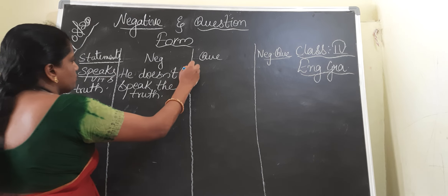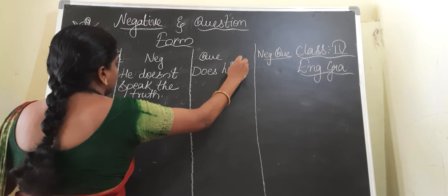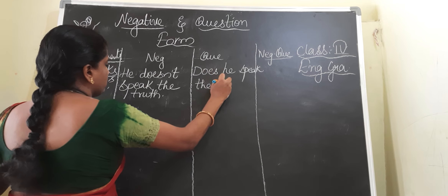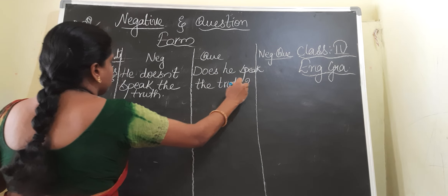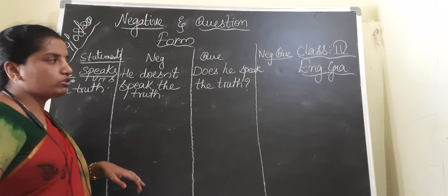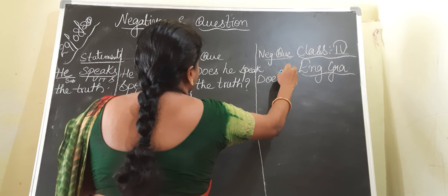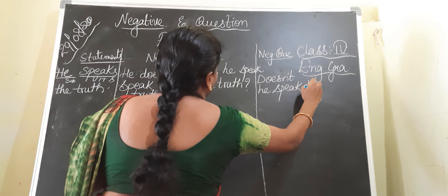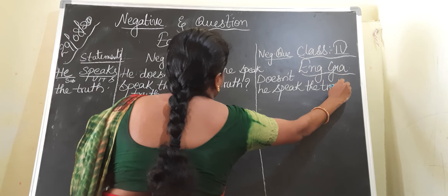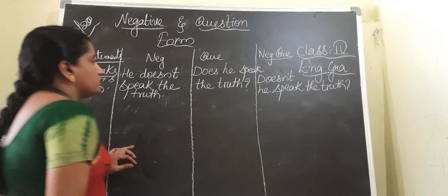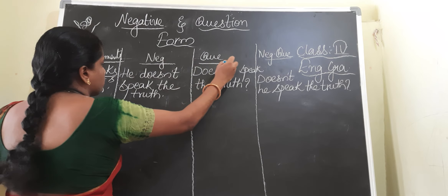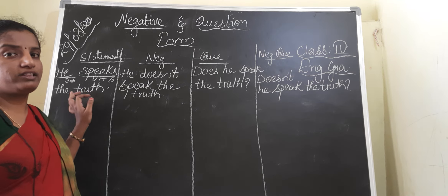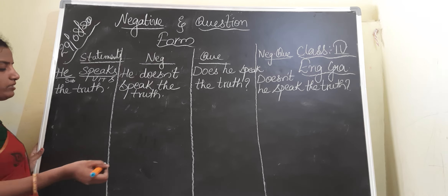For the question form of 'He speaks the truth': Does he speak the truth? — question mark. And for the negative question, you use 'doesn't': Doesn't he speak the truth? — question mark. So in this way I gave you the negative form, question form, and negative question of a statement where there is V1 with '-s.' Coming to the next statement.